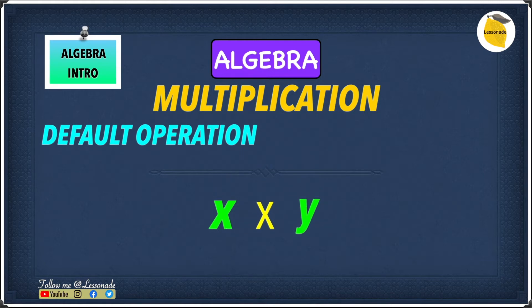So let's say there is no sign between the x and the y. If there is no sign between the x and the y, then it's automatically considered that this is a multiplication problem. Because multiplication, as we said before, is a default operation.